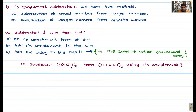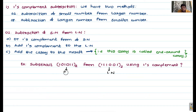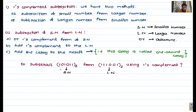Here is the example: subtract 101011 from 111001 using the one's complement method. First, identify which is the smaller number and which is the larger number. This is your larger number (LN) and this is your smaller number (SN). Since this is subtraction of smaller from larger, we first find the one's complement form of the smaller number.